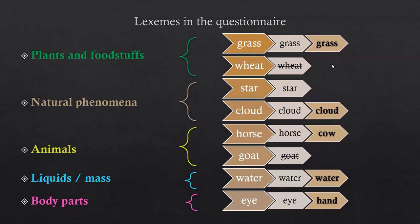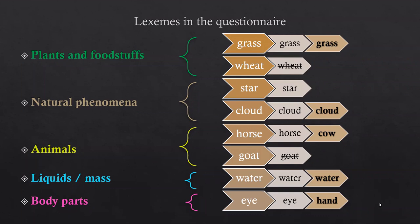My PI said grass is fine, cloud is okay, but we should use cow instead of horse — because she had already hired an illustrator to draw the exact number of animals in each picture, so she wanted me to test those drawings, while all the other images are photographs. And instead of eye, she wanted me to test hand instead.